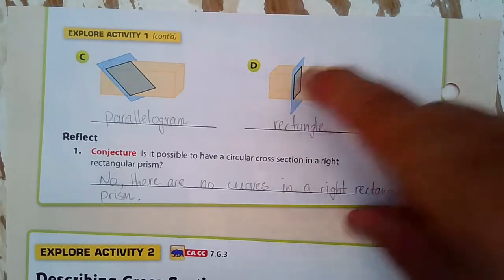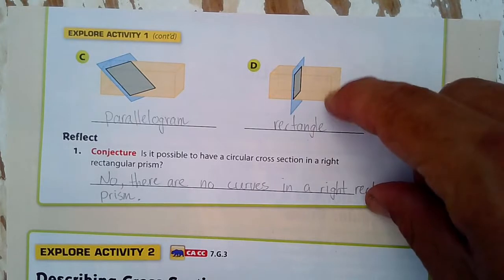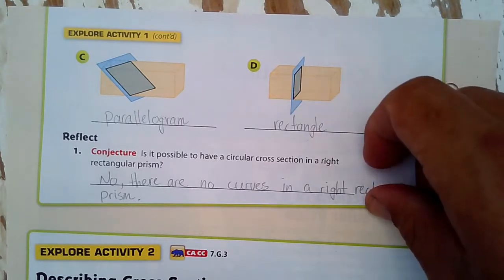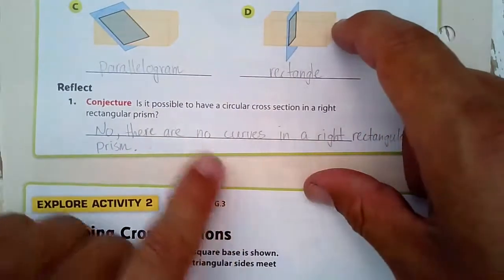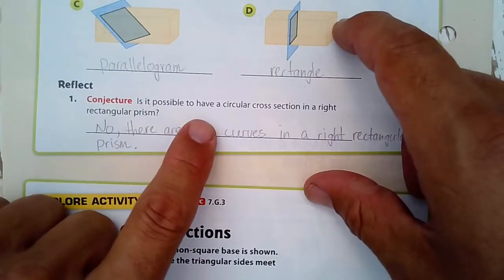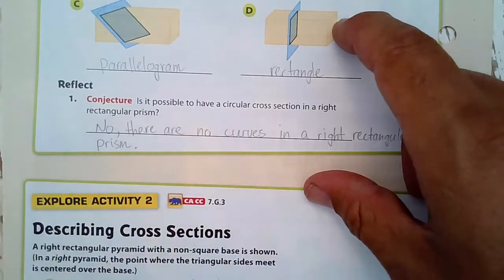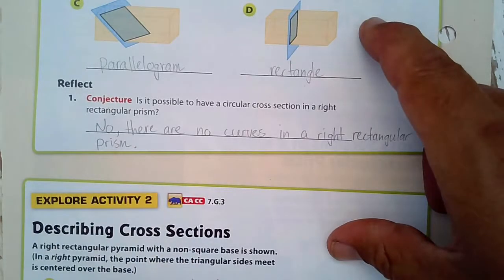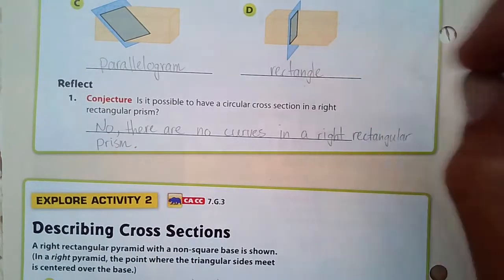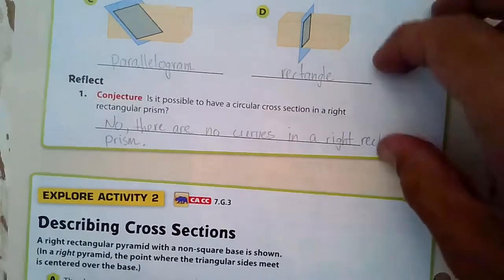This right here is going to match this right here. This kind of looks like a square, but I guess we're calling it a rectangle. Conjecture. Is it possible to have a circular cross-section in a right rectangular prism? I say no, because there's no curves in a right rectangular prism like that.